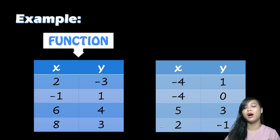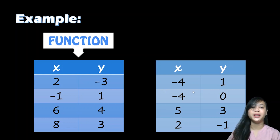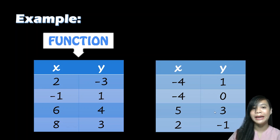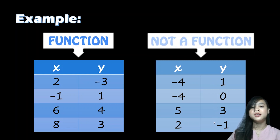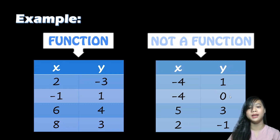Another example: we have a table where the x values are negative 4, 1, and 0.